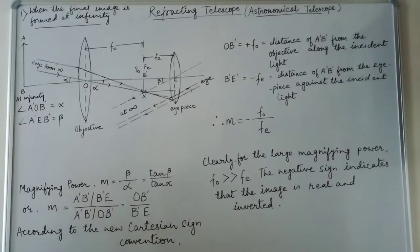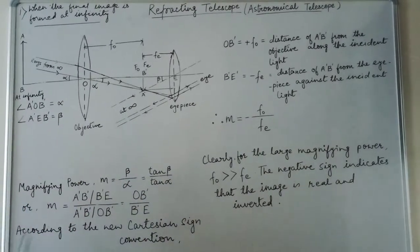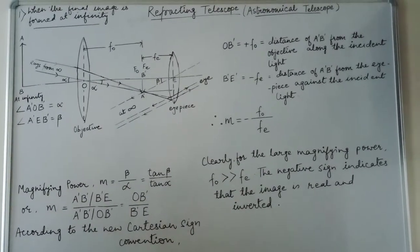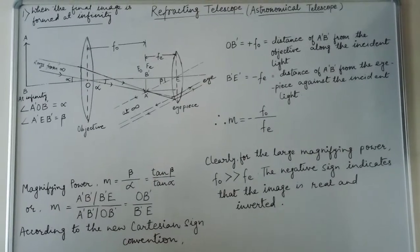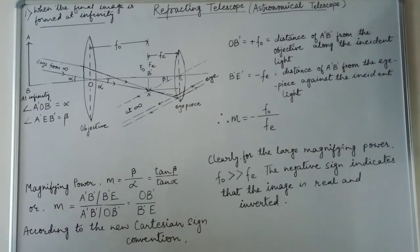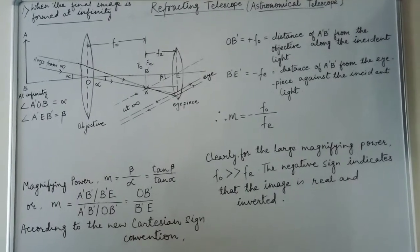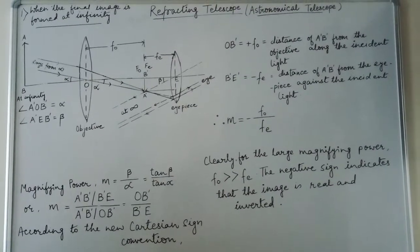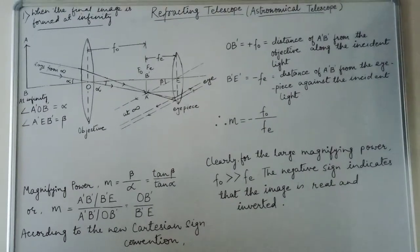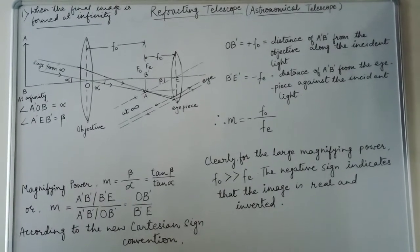the final image is formed at infinity and is highly magnified and inverted with respect to the object. Now, magnifying power in normal adjustment is defined as the ratio of the angle subtended at the eye by the final image as seen through the telescope to the angle subtended at the eye by the object seen directly, when both the image and the object lie at infinity.